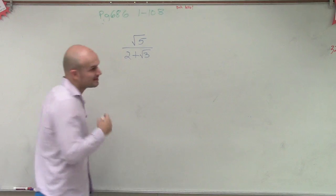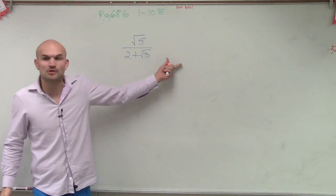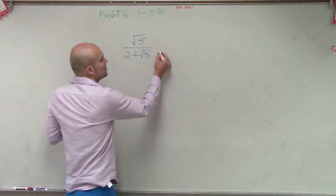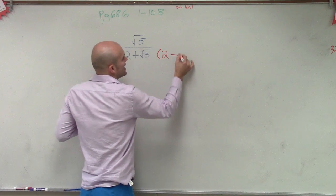If you guys remember, rationalizing the denominator is multiplying by the conjugate. So we cannot divide by our irrational number. So to simplify this, we're going to multiply by the conjugate.